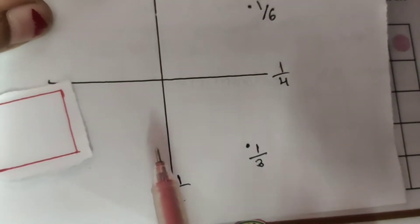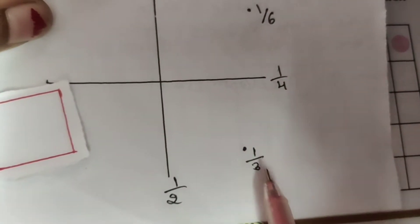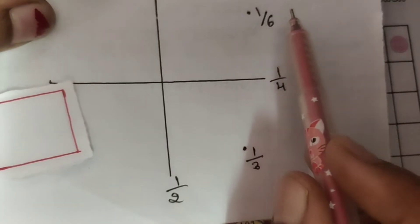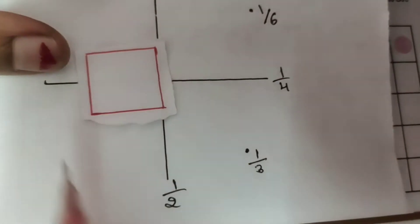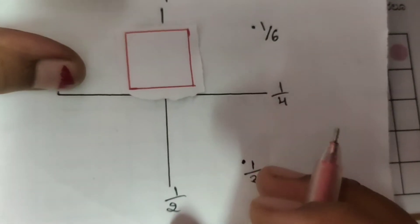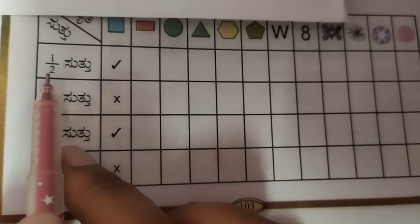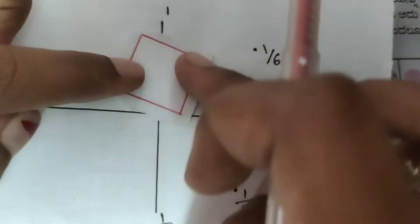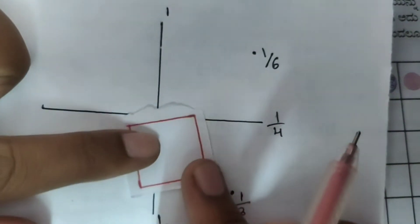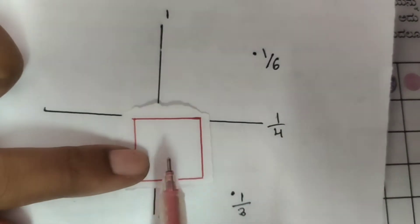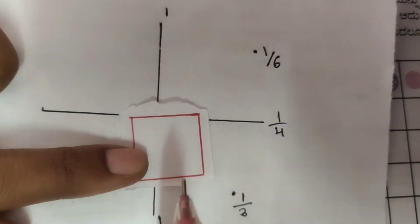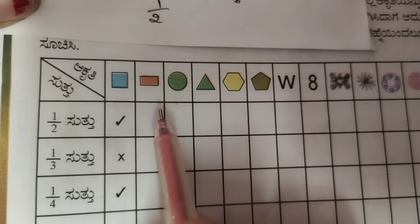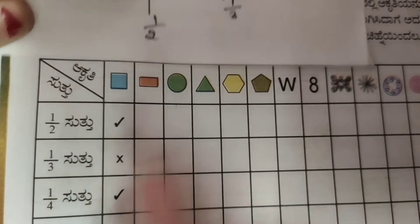In the first row: half rotation, complete, 1 by 4, 1 by 3, 1 by 6. For the first square: first rotation 1 by 4, complete half rotation — original position, same figure — so right mark.